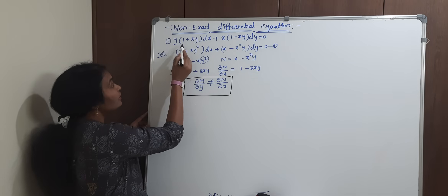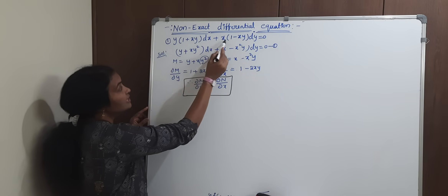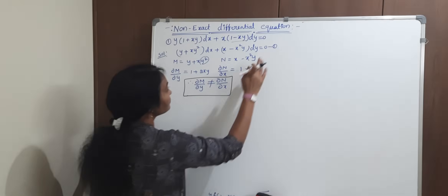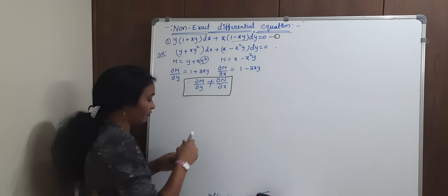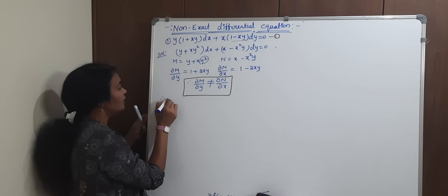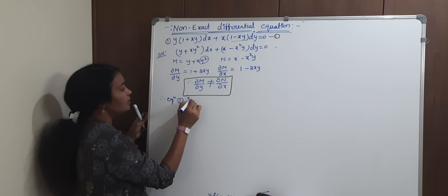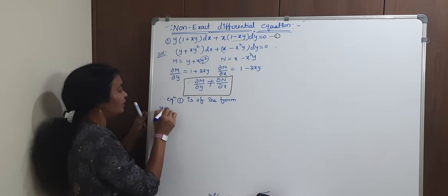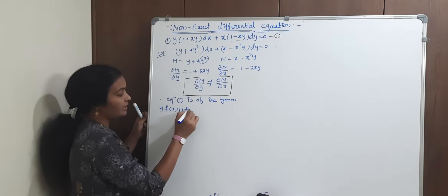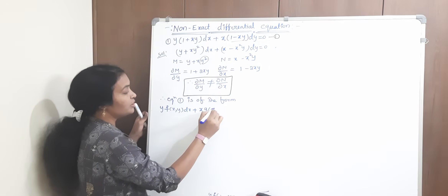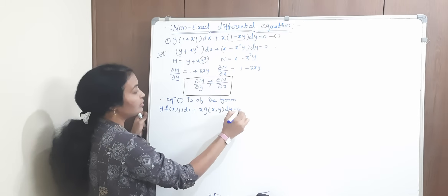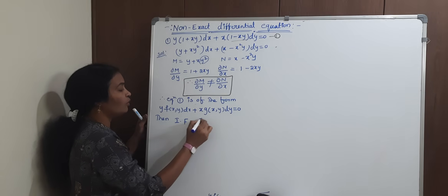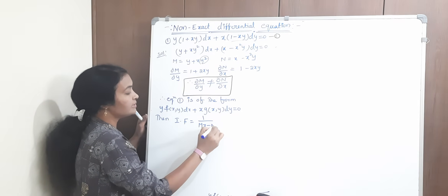The next method applies when the equation can be written as y·f(x,y) dx plus x·g(x,y) dy equal to 0. In this case, equation 1 is of this form, so the integrating factor is 1 by mx minus ny.